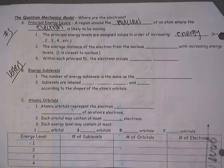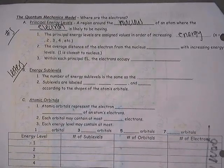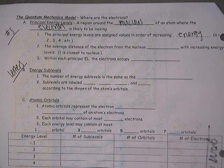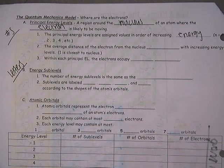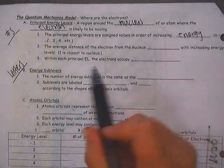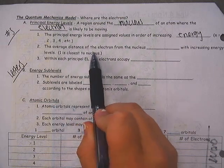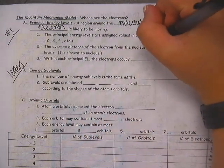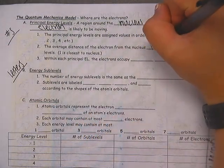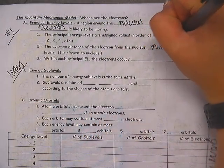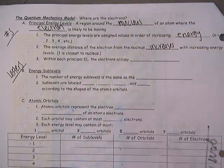For example, energy level 1 has the lowest energy, and energy level 7 — if there is an energy level 7 — will have the highest energy. The average distance of the electron from the nucleus increases with increasing energy.